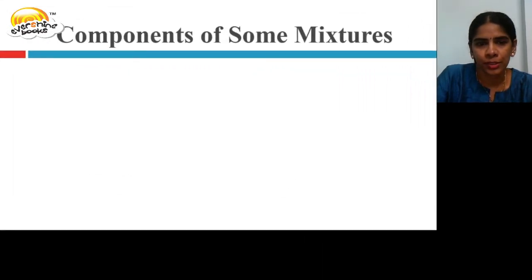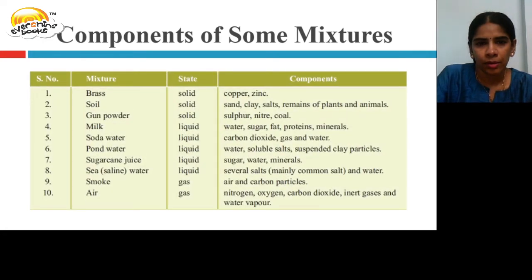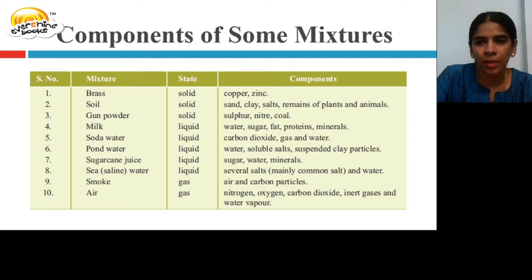Components of some mixtures: Brass is a solid and is a mixture of copper and zinc. Soil is a solid containing sand, clay, salts, and remains of plants and animals. Gunpowder is a solid containing sulfur, nitrate, and coal. Milk is a liquid containing water, sugar, fat, proteins, and minerals.